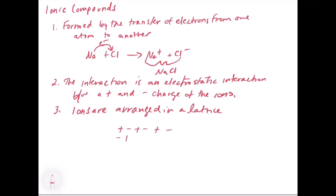So you have something that looks like plus, minus, plus, minus, plus, minus — and it just repeats and repeats: plus, minus, plus, minus, plus, minus. That would be an example of a lattice — it just keeps repeating on forever and ever.